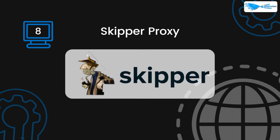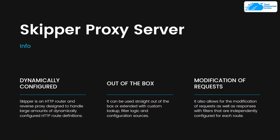At number eight we have Skipper proxy, which is an HTTP router along with a reverse proxy designed to handle large amounts of dynamically configured HTTP route definitions. It can be used straight out of the box, or extended with custom lookup filter logic and configuration services. It also allows requests and responses to be modified with filters that are independently configured for each individual route.